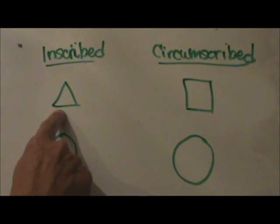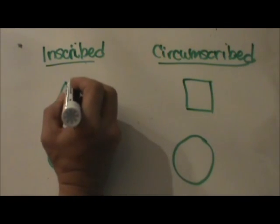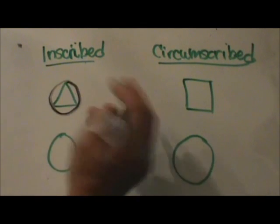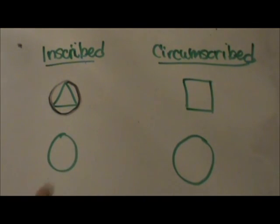First, inscribed. We have a triangle and we are going to have it inscribed in a circle. I am going to draw the circle around it so we say this triangle is inscribed in the circle.